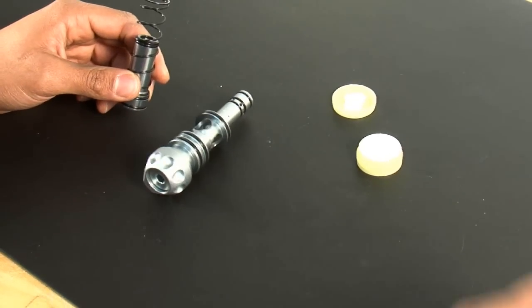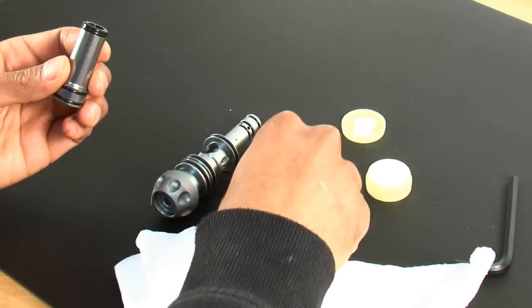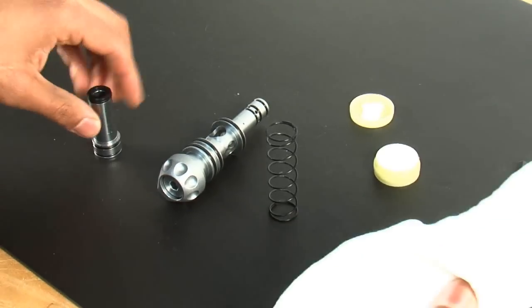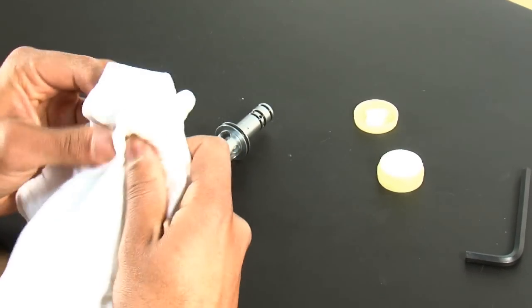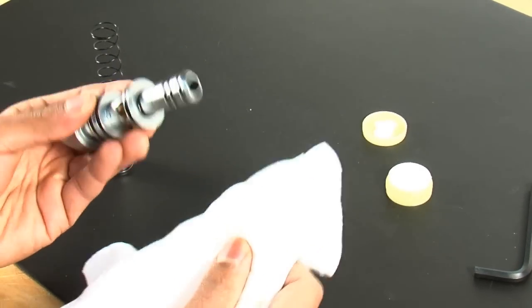Then you're going to get into maintaining the bolt. You're going to take the spring off the front of the bolt. Wipe the bolt down with a clean towel. Wipe down the spring. And then wipe down the small bolt guide o-rings here on the front of the bolt guide.